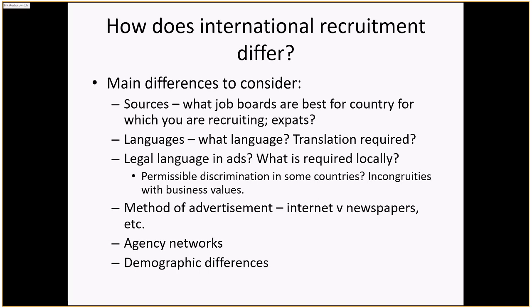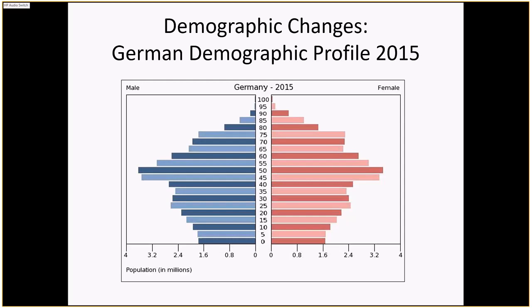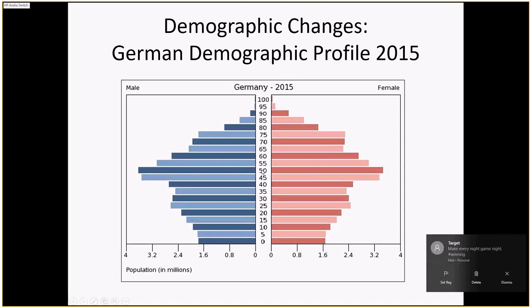And finally, demographic differences. There are substantial demographic differences as it relates to age and where the labor exists, and that's part of the drive for international business. For instance, here is a look at the German demographic profile in 2015. You can see it has its largest population in the range between about 45 and 55. Whereas the Brazilian demographic profile — which is pretty common for most developing countries — tends to have much heavier populations in the lower age ranges.